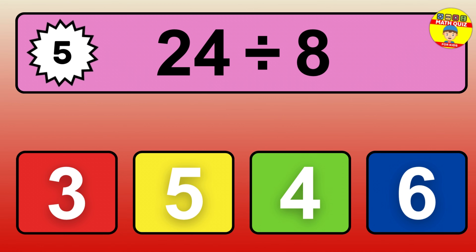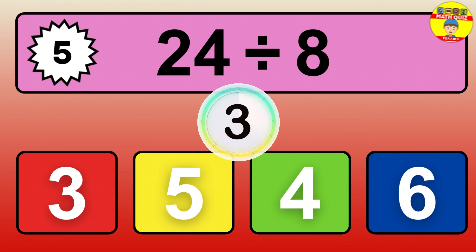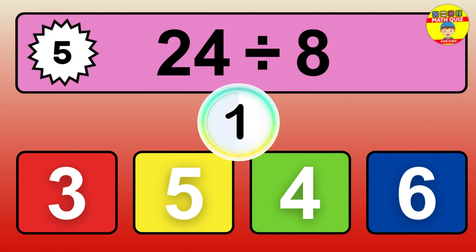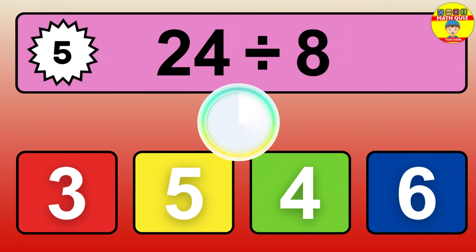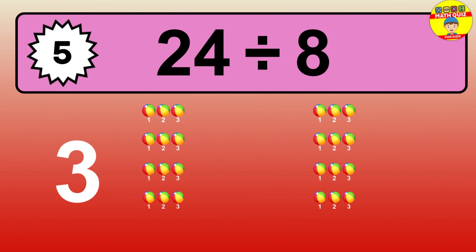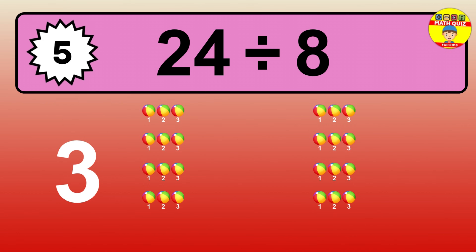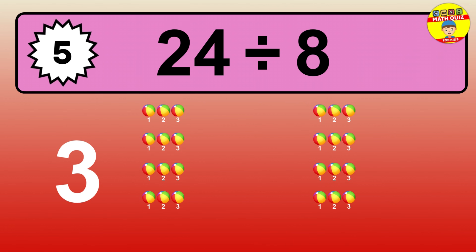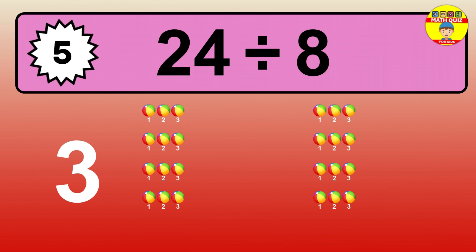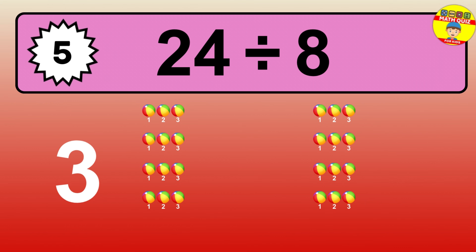24 divided by 8 is… time to think. Let's go to the solution. Divide the number 24 by 8. Each group contains 8 units, so dividing 24 by 8 results in 3 equal groups. Thus, the result is… 24 divided by 8 equals 3.